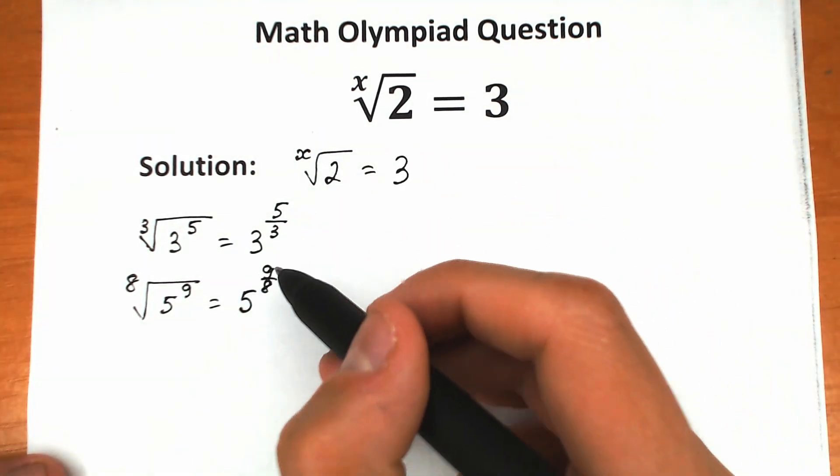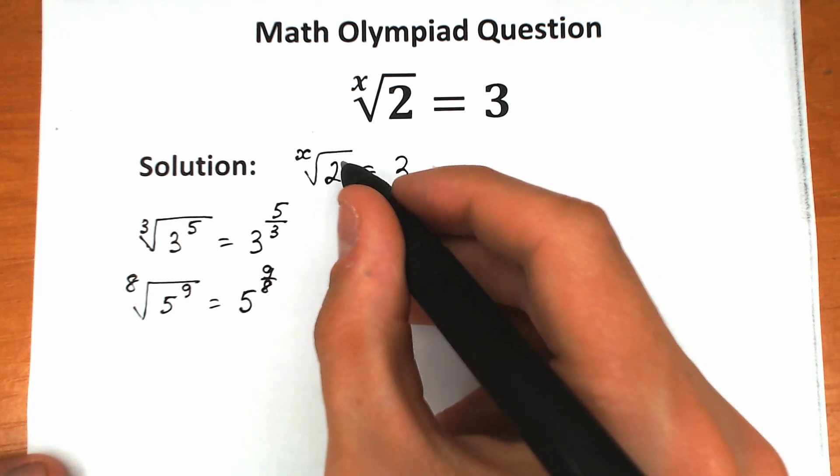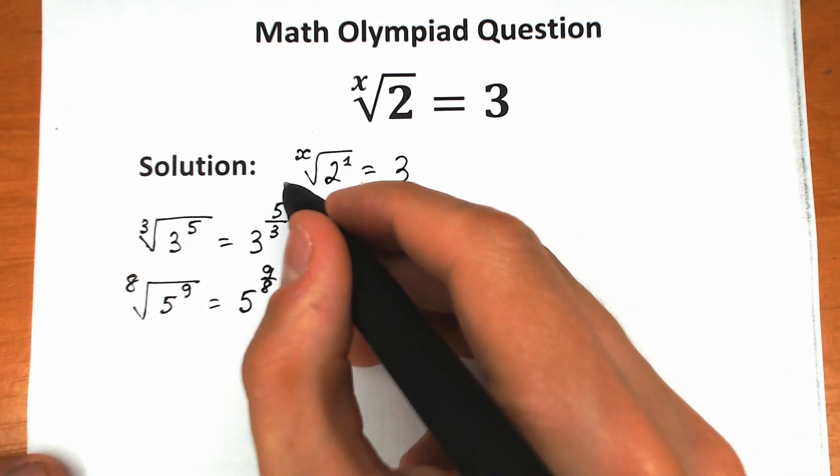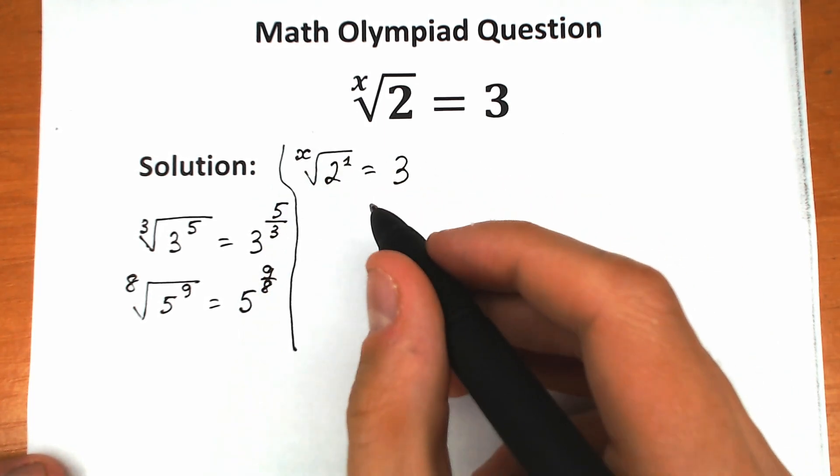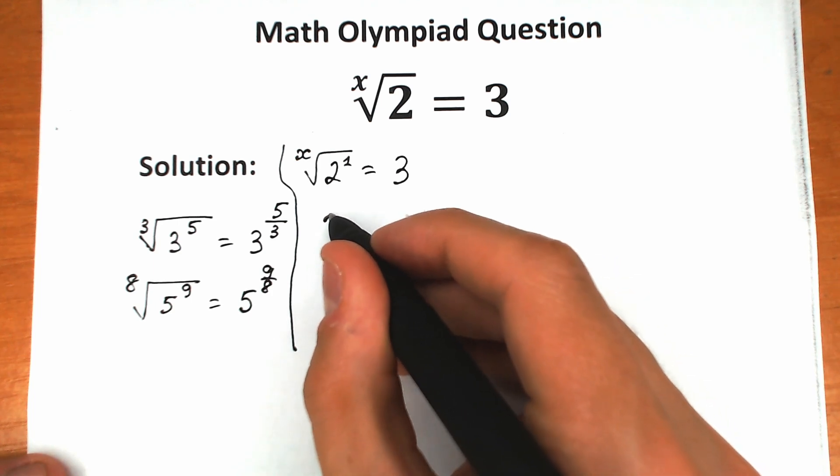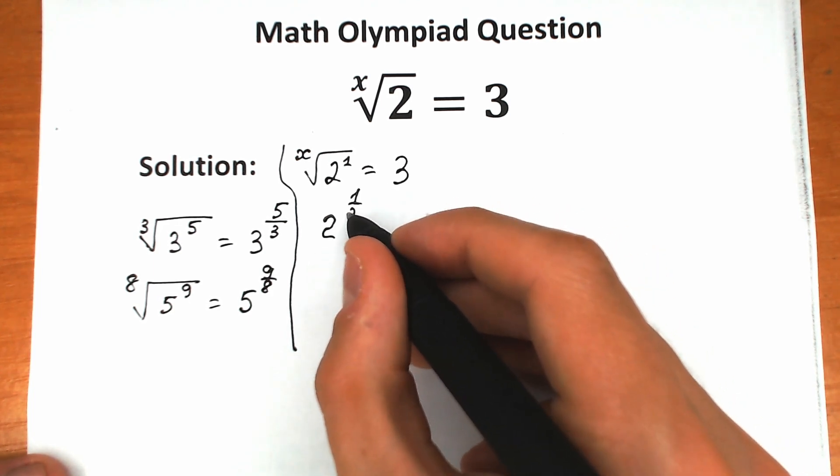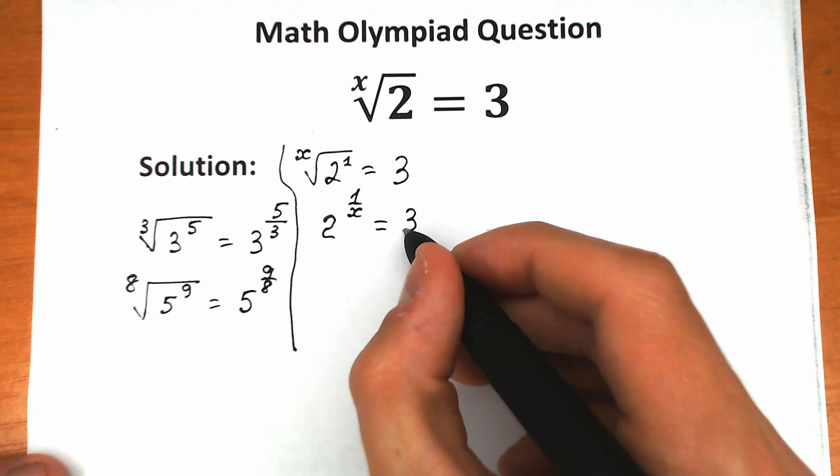Let's use the same rule in this case. Right here we have 1, so we can write this expression as 2 to the power of 1 over x, equals 3.